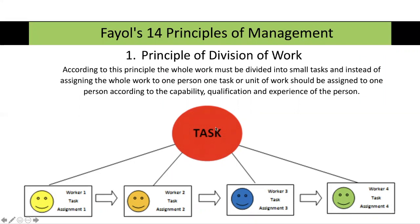For example, in a school, one teacher does not teach all subjects. The work is divided into small units — our English teacher, for instance, has the qualification and experience in English, so English is assigned to them. This is why we divide work into small units and assign each unit to one person.